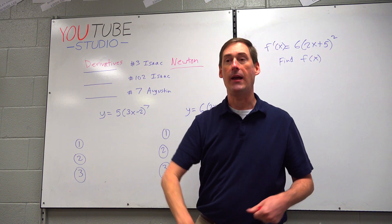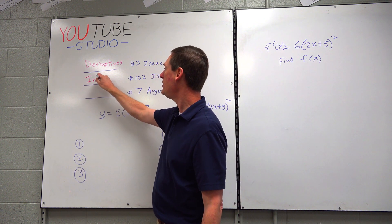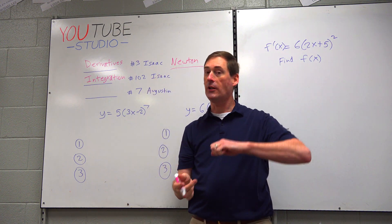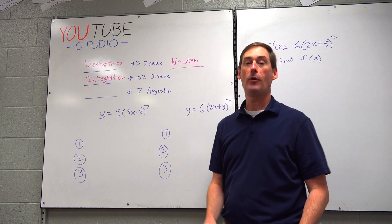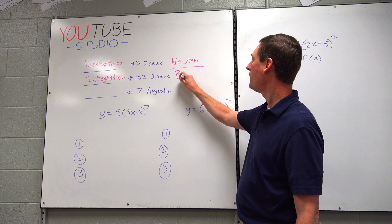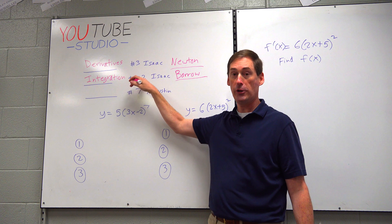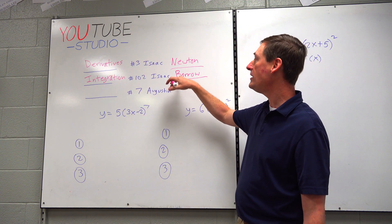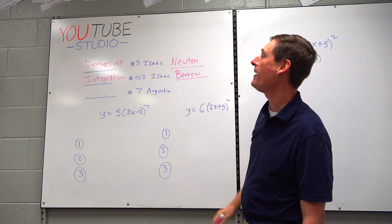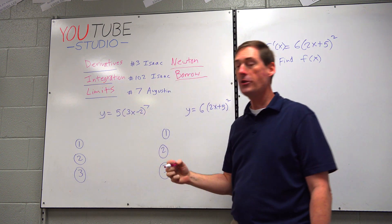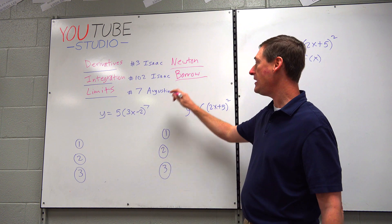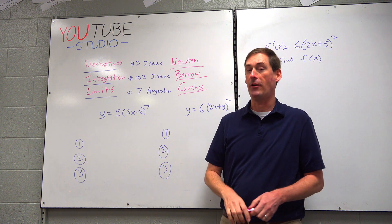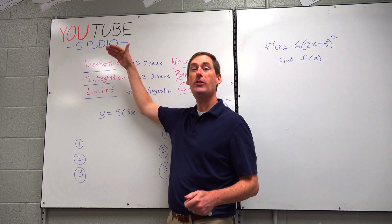What we're doing today is the anti-derivative — the formal word for it is integration. Integration means: I give you the derivative, you tell me where it came from. It's a little harder to go backwards than forwards. Integration was discovered by number-102-ranked Isaac Barrow, an English mathematician and the teacher of Sir Isaac Newton. Limits come later; most credit goes to number-seven-ranked Augustine Cauchy, who developed much of BC calculus and whose work allowed us to prove the existence of derivatives and integration.